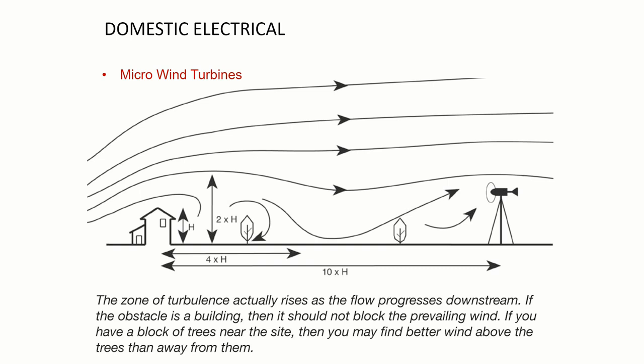There's a diagram here which talks about the kind of turbulence that you can get around buildings and trees. Normally what happens with the pressure differences for wind, we might get a wind flow over the top of a building and then there's negative pressure at the back which effectively pulls the flow of air back down. The same thing would happen around trees. Zone of turbulence rises as the flow progresses downstream. If the obstacle is a building, it shouldn't block the prevailing wind.